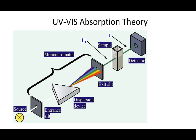The way UV-visible absorption spectroscopy works is you have a light source. The light goes through a slit just to make a beam, then through a dispersion device — usually a diffraction grating that acts like a prism — which splits the light up into a rainbow. A slit then allows only a certain wavelength of light to come through. This whole section is called the monochromator, meaning it selects a single wavelength, a single color of light.